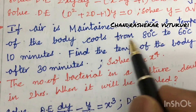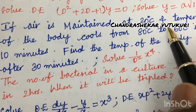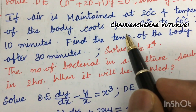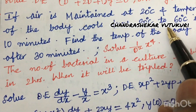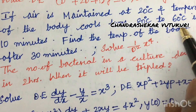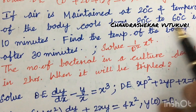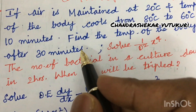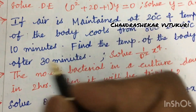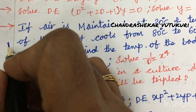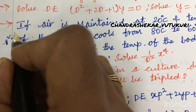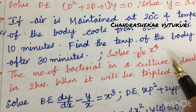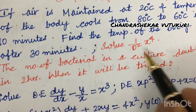If air is maintained at 20°C and the temperature of the body cools from 80°C to 60°C in 10 minutes, find the temperature of the body after 30 minutes. This type of problem is definitely in the question paper — it may be the second question.